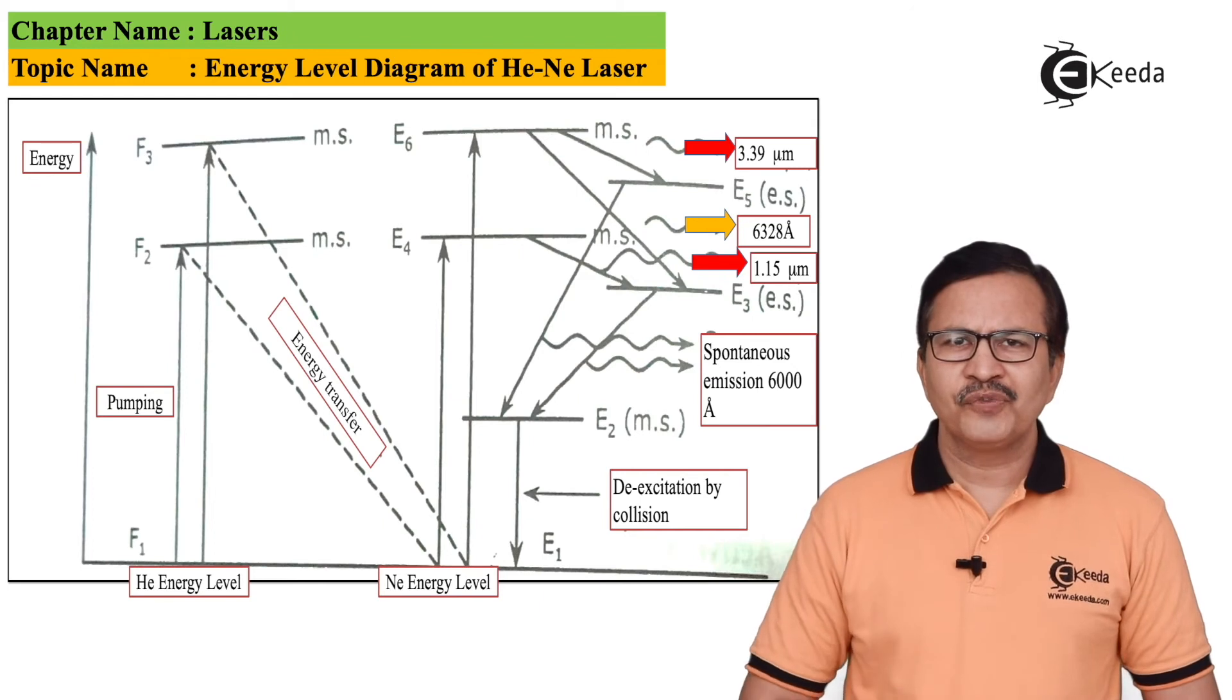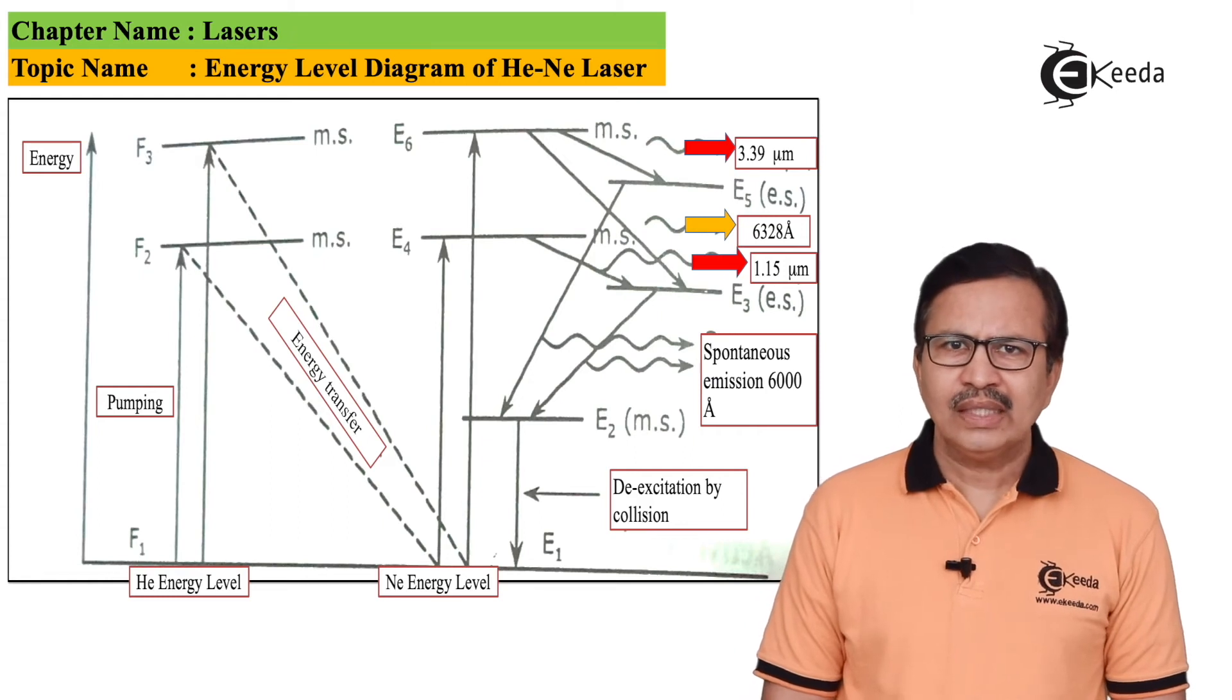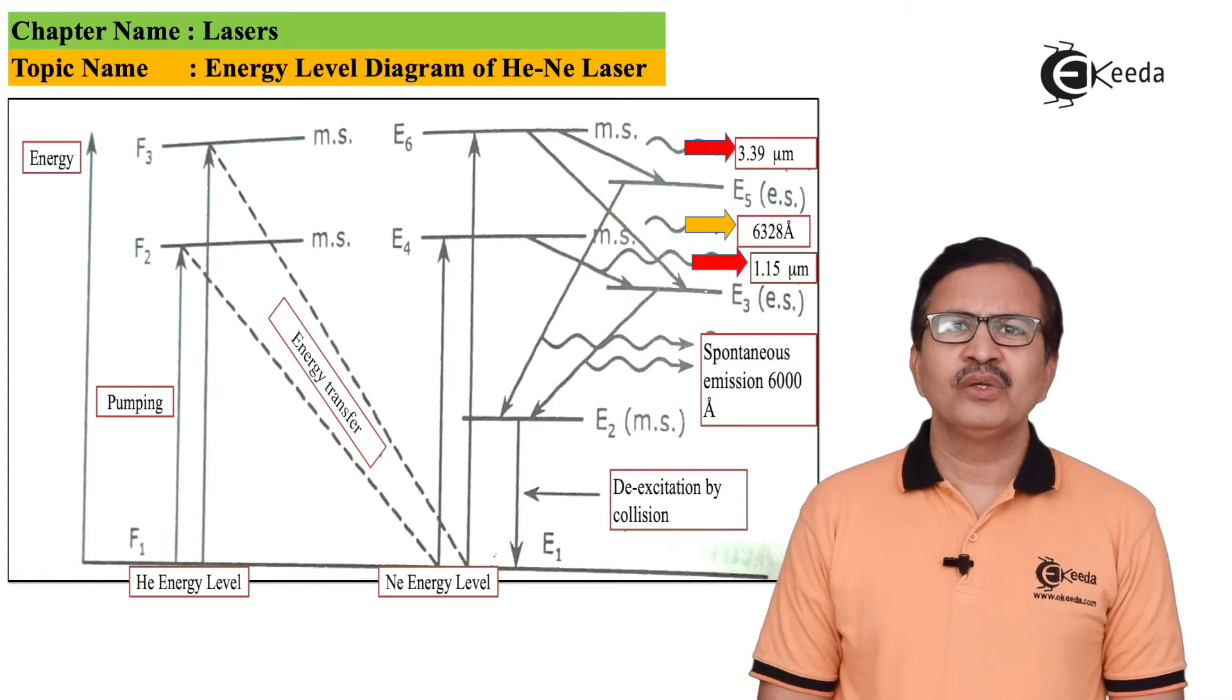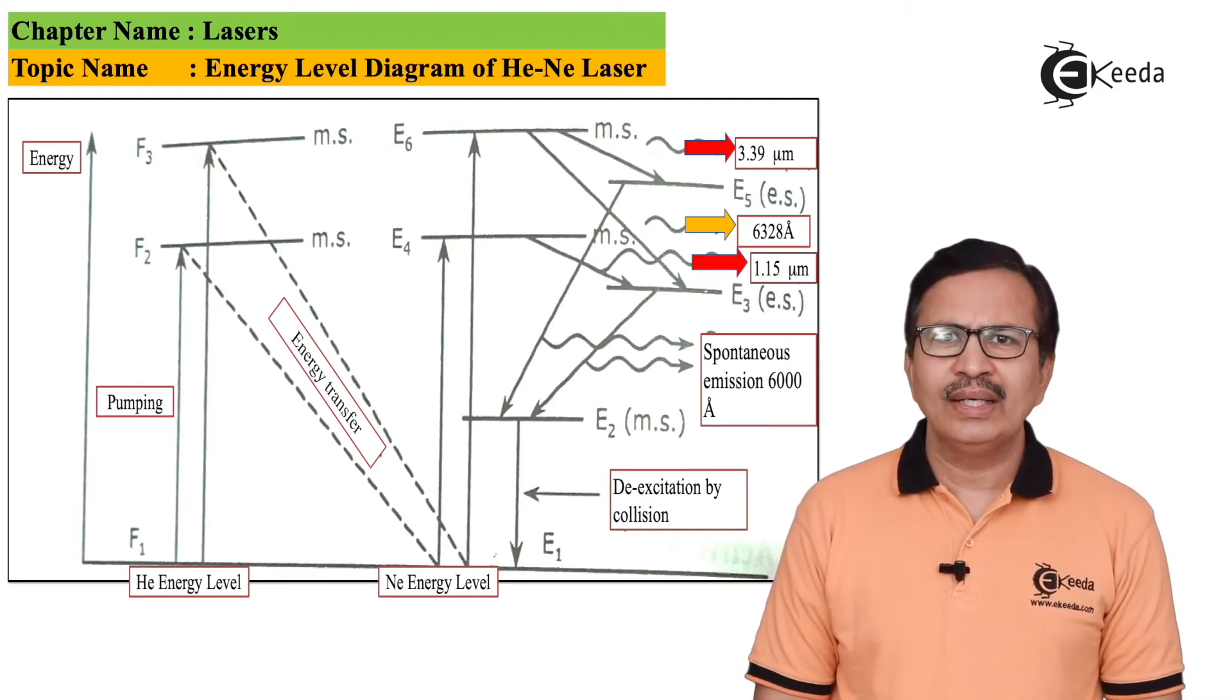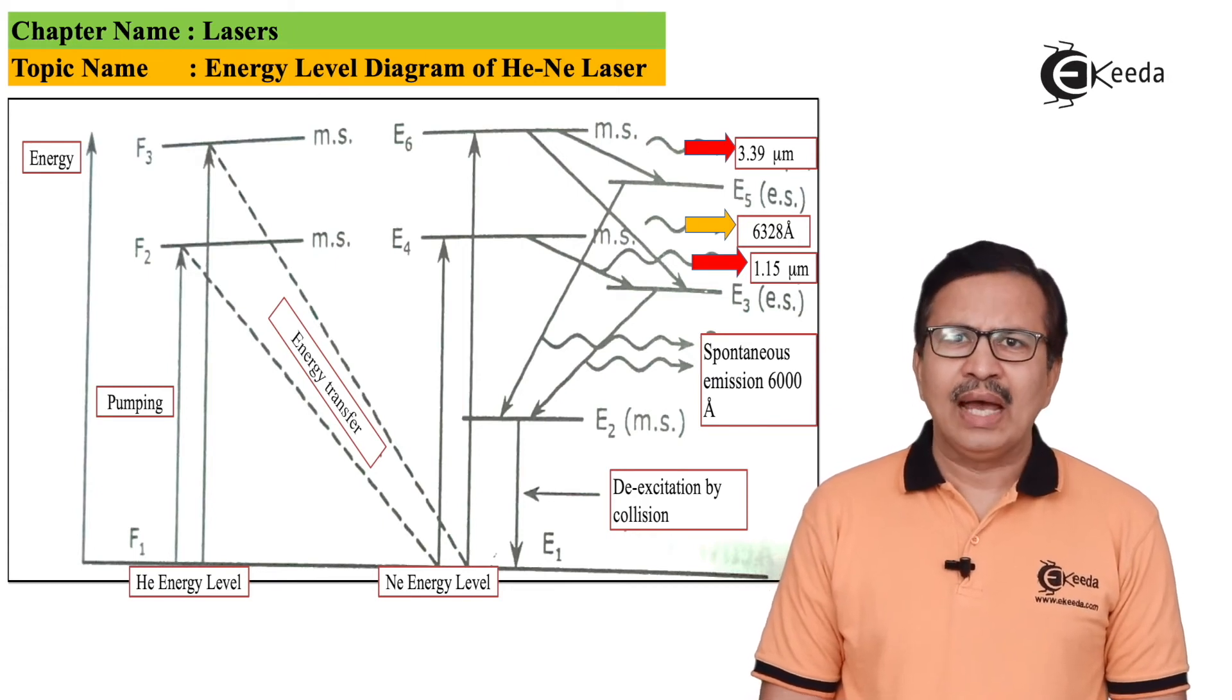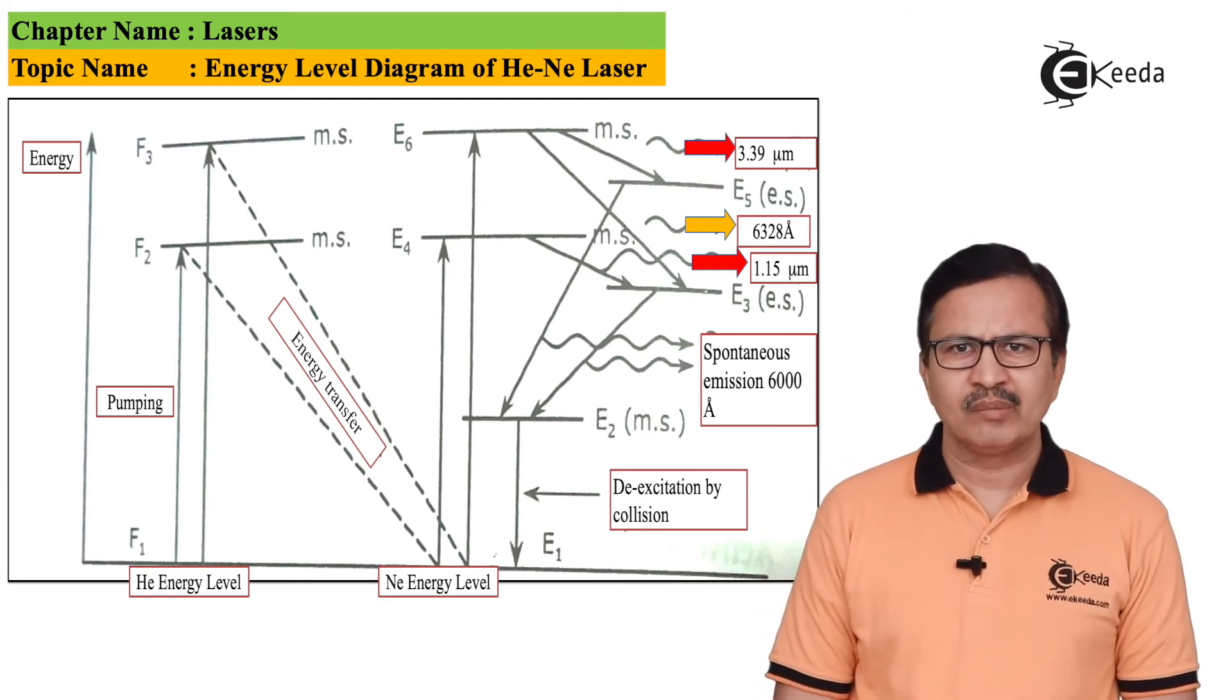Both energy levels E5 and E3 are excited states. Atoms will not stay in these for very long. Therefore, there will be spontaneous emission of incoherent radiation of 6000 angstroms, and atoms will eventually occupy energy level E2, which is also a metastable state.